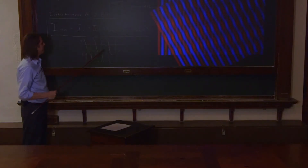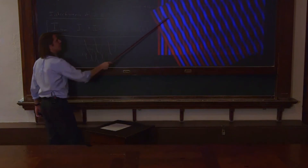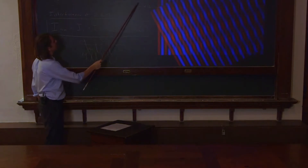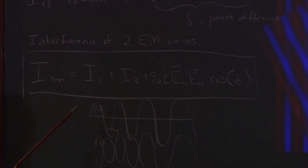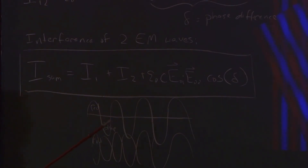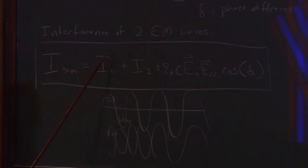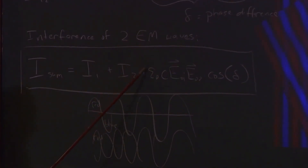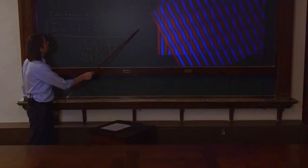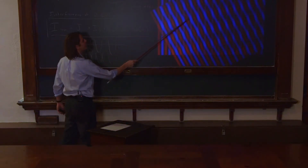When the two waves overlap constructively, we get a stronger signal — the bright red and blue. When they overlap destructively, we get nothing, shown here as washed-out dim purple. This behavior is set up by the cosine term. The cosine of delta can range from plus 1 to minus 1, so if I₁ equals I₂, the interference term can as much as double the total irradiance or drive it all the way to zero.